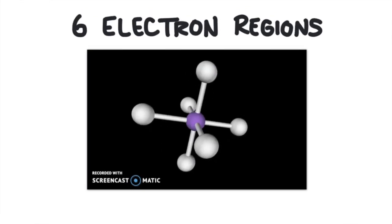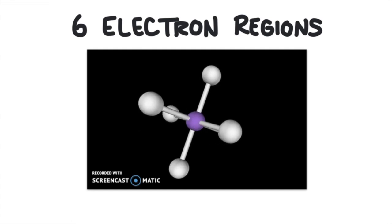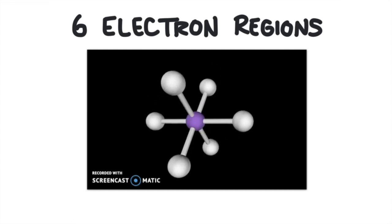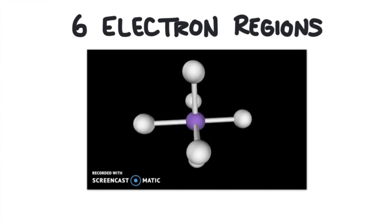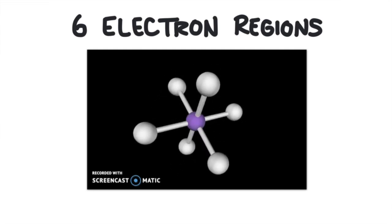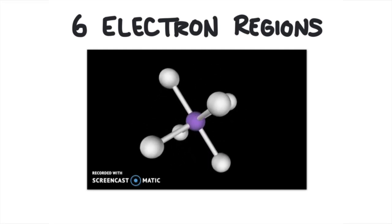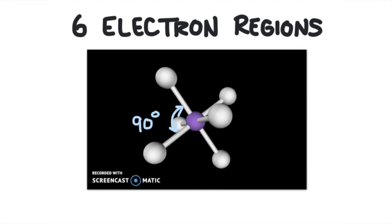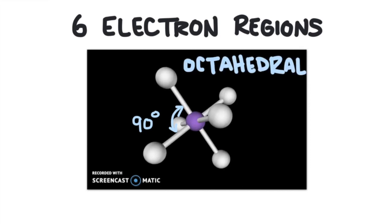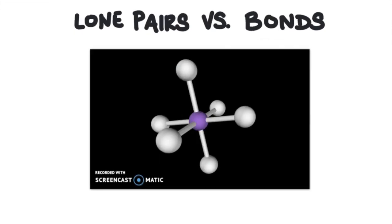With six electron regions, they're going to space across the central atom like this. No matter how I look at this one, the angle is always 90 degrees. This shape is called octahedral — it splits a sphere into eight portions and the angle is 90 degrees.